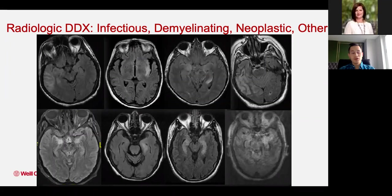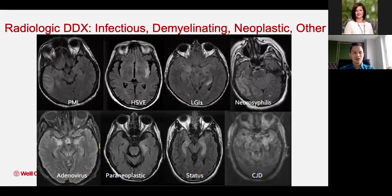We can do it again with T2 FLAIR changes. Look at these eight different cases — can you tell which is more infectious versus autoimmune/demyelinating just by the pattern on MRI? The answer should still be no. The cases include PML, herpes, LGI1 (an autoimmune encephalitis), neurosyphilis, adenovirus, a paraneoplastic disorder, status epilepticus, and CJD (prion disease).